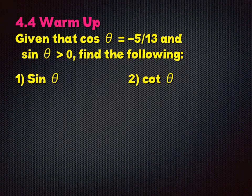In section 4-4 we talked about trig functions of any angle. Now we're moving around the unit circle, going outside it, and using it with right triangles — a combination of the two. This problem says: given that cosine of theta is negative 5 over 13, and sine is greater than 0, find the following. Because those angles are not on the unit circle, I know immediately I have to draw a right triangle.